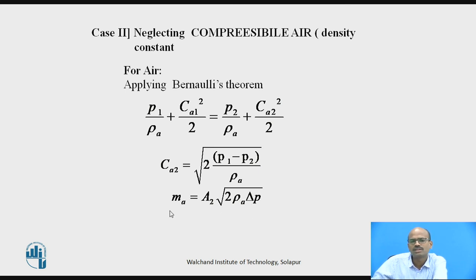Here also neglecting the compressibility. Obviously, actually the air is compressible, but if you are interested to find approximate air-fuel ratio, then you can adopt neglecting compressibility. Then actual air flow rate as usual is equal to coefficient of discharge into theoretical mass flow rate of air. So this is the third equation. We will be having two air-fuel ratios.